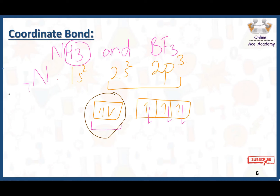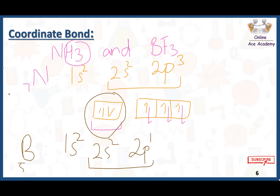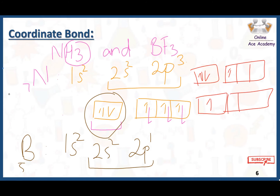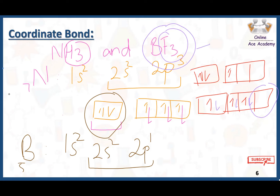On the other hand, we have BF3. The atomic number of boron is five, with electronic configuration 1s², 2s², 2p¹, giving three electrons in the valence shell. After the three fluorines bond with boron, boron trifluoride has a deficiency of two electrons — it has only six electrons in its valence shell. Therefore, boron trifluoride acts as the acceptor atom, while NH3, which has a complete octet, acts as the donor.